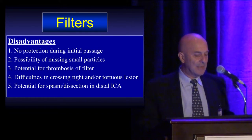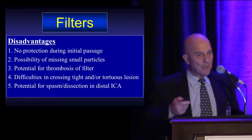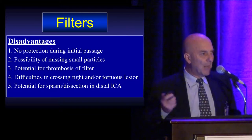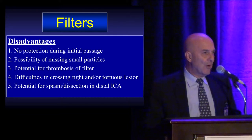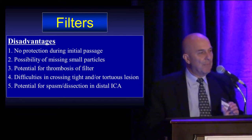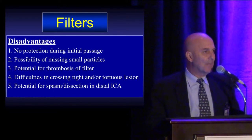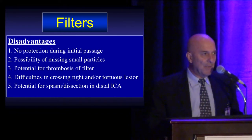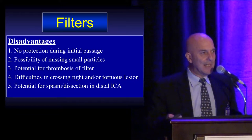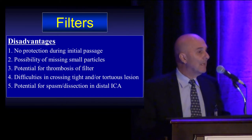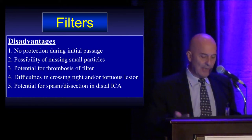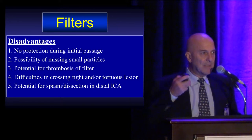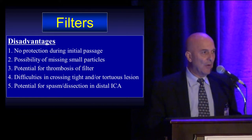However, there are disadvantages. There is no protection when you cross the lesion with the filter, so you can push particles to the brain and the patient can have a stroke just by crossing the lesion. Because of the pores, you can miss small particles — everything below 100 microns can go through and reach the brain. The filter can get occluded by thrombus, and it may be difficult to cross tight lesions or tortuous anatomy. There is also a risk of spasm or dissection in the internal carotid artery.